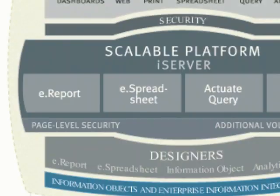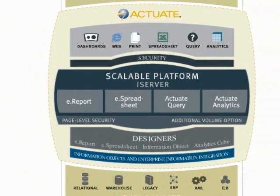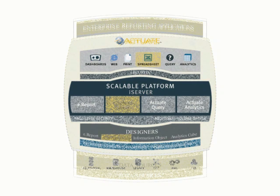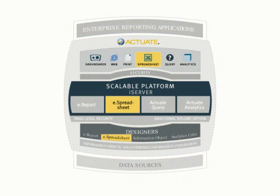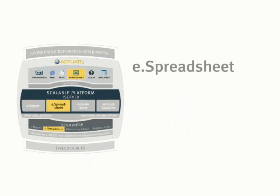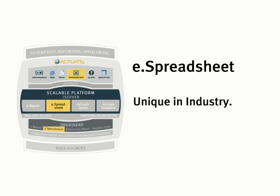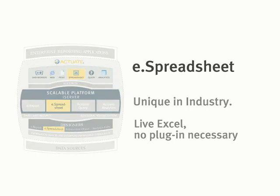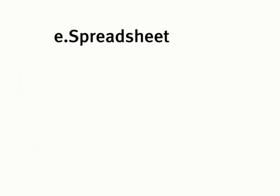The Actuate eSpreadsheet leverages Actuate's unique information objects technology to directly access disparate and complex data sources and present information in real time. The Actuate eSpreadsheet works directly with Actuate iServer and can also be bundled with eReport option and eAnalysis option for maximum reporting and analysis flexibility.